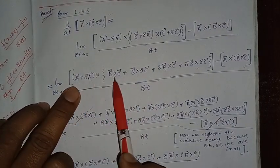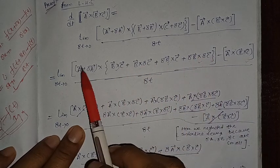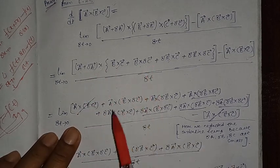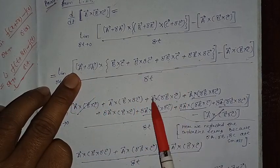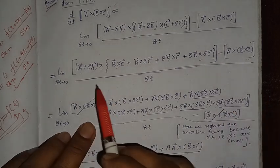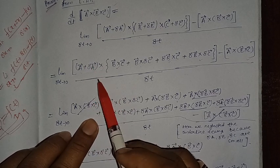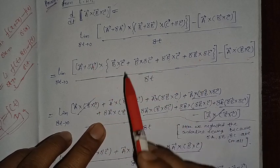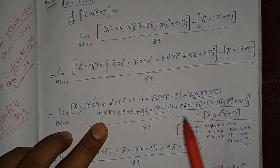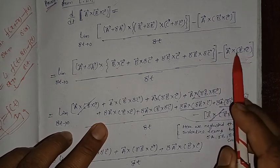Again, multiplying carefully: a vector is crossed with all four terms giving a×b×c, a×b×Δc, a×Δb×c, a×Δb×Δc. Then Δa is also multiplied with all four terms, giving Δa×b×c, Δa×b×Δc, Δa×Δb×c, Δa×Δb×Δc. The last term is minus a × b × c.